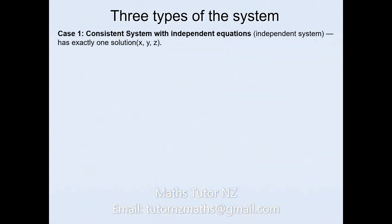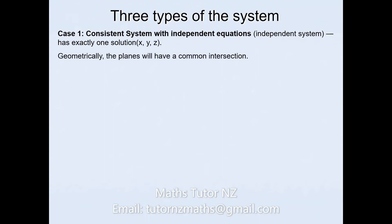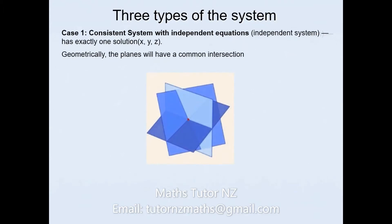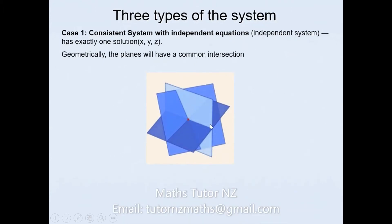The three types of cases we'll be looking at in NC Level 3: the first is a consistent system with independent equations. This will have a unique solution. Geometrically, the planes will have a common intersection — they intersect at a common point, resulting in a unique solution.